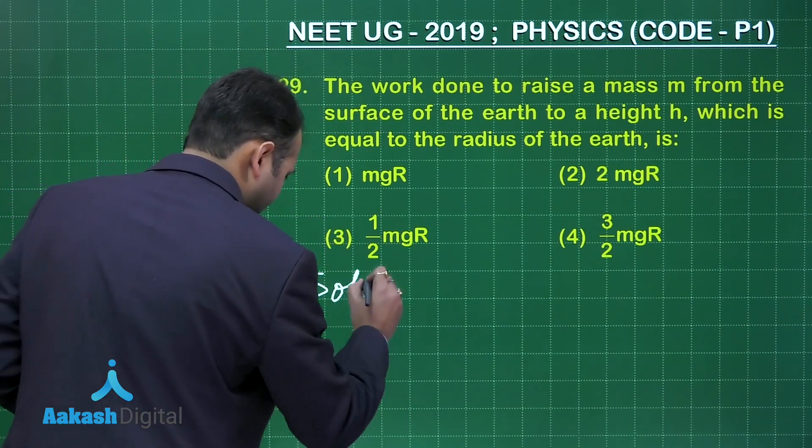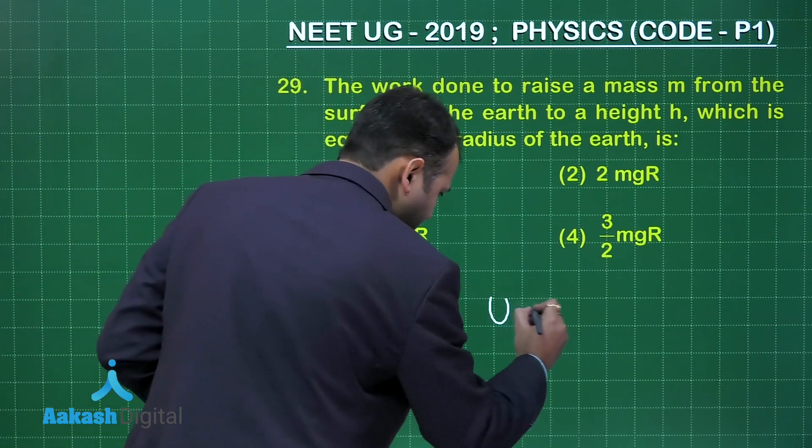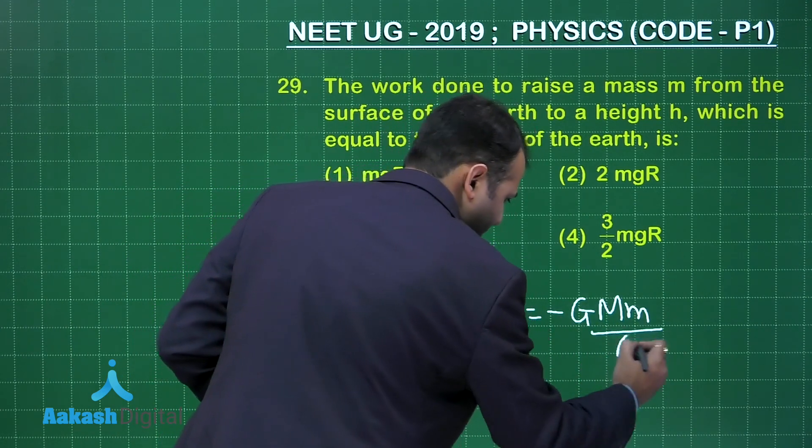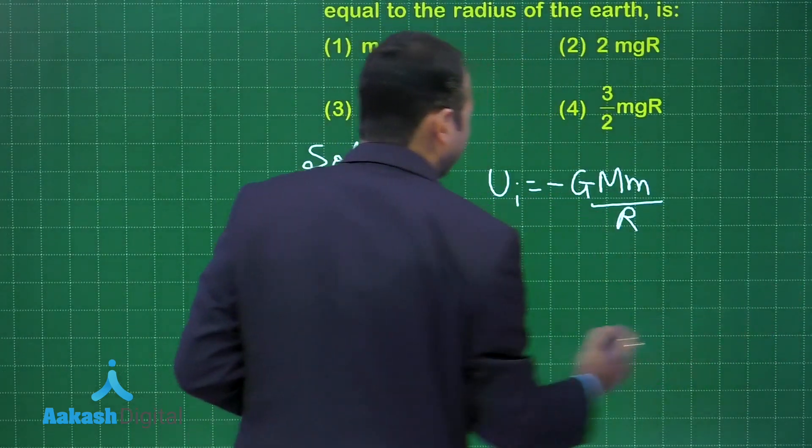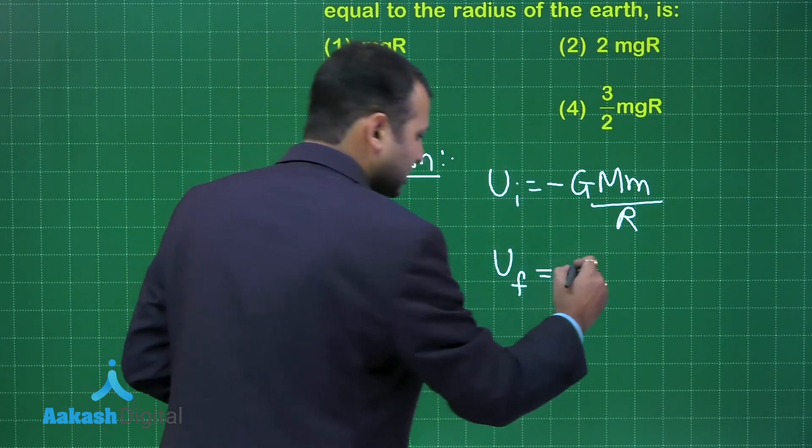So initial potential energy when it was at surface of earth would be -GMm/R. Now after some time when it moves to the final position which is equal to height h, it will become -GMm/2R because the distance from center is now 2R.